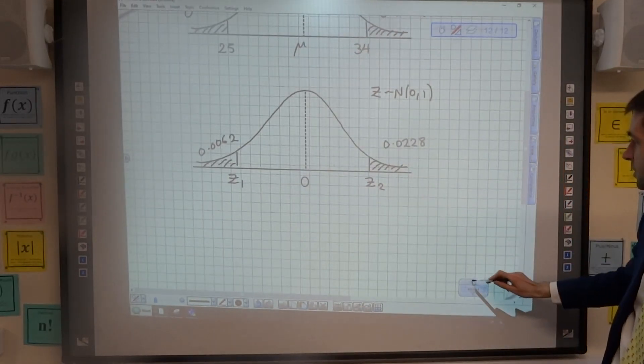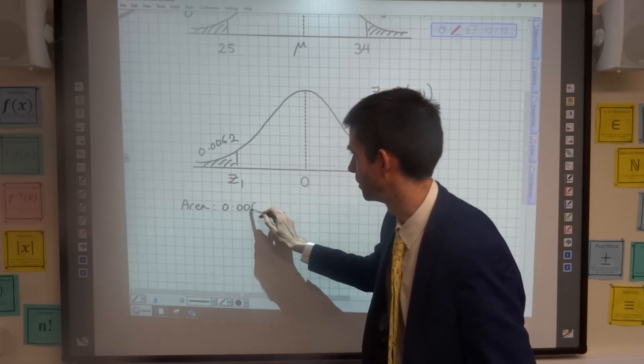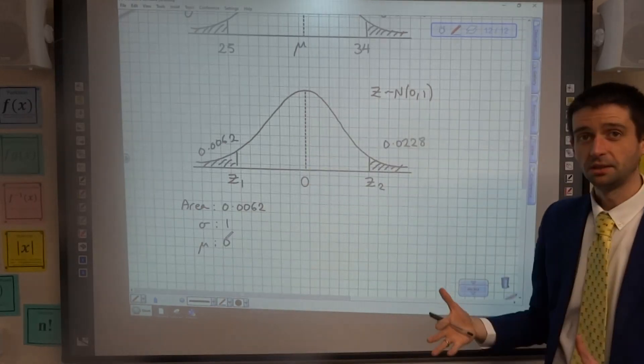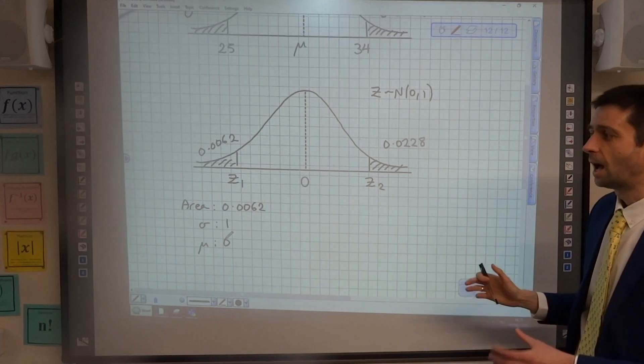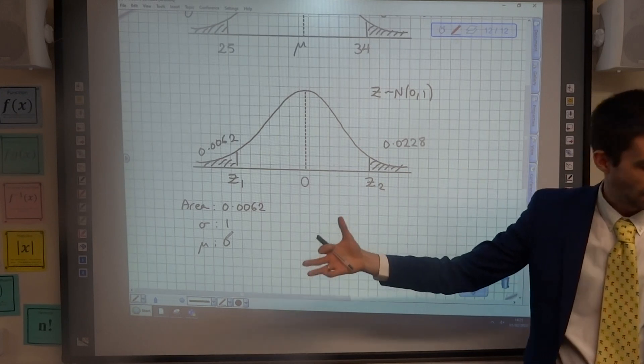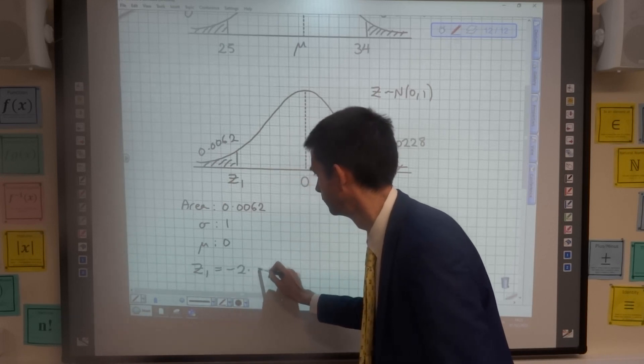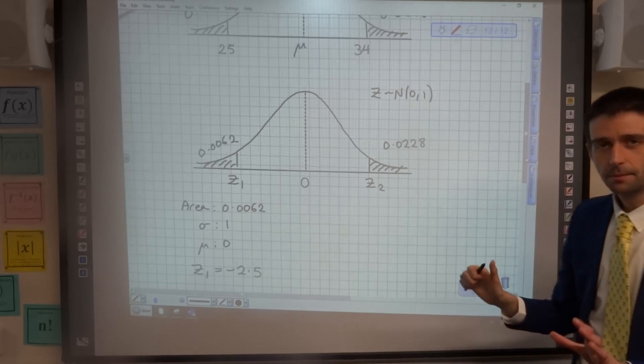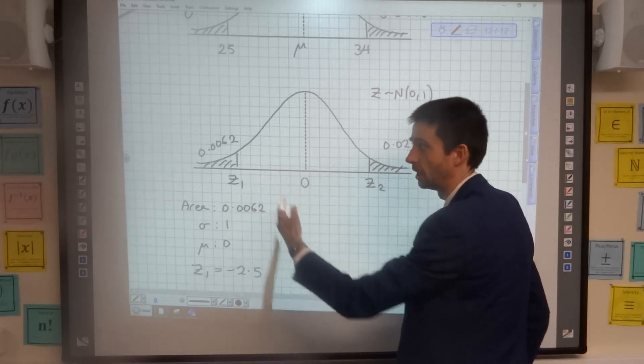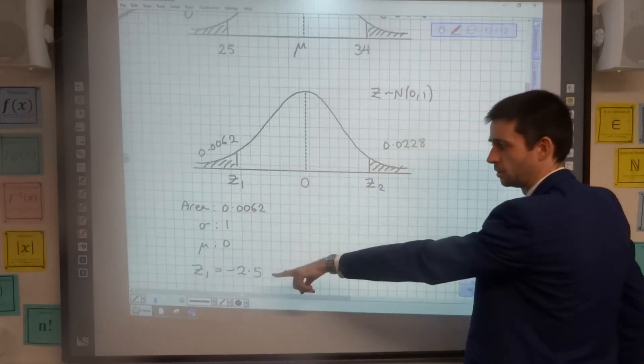Looking at z1 to start off with: the area to the left is 0.0062, my standard deviation is 1, and my mean is 0 because I'm using the standardized normal distribution. If I put that information into the inverse normal function of the calculator, it tells me that z1 is negative 2.5. Now it coming out negative makes sense. What it's saying is that this number here is two and a half standard deviations below the mean. So I've got that one z value there.